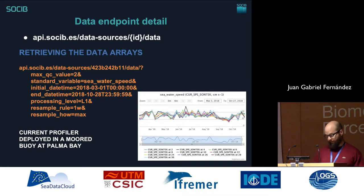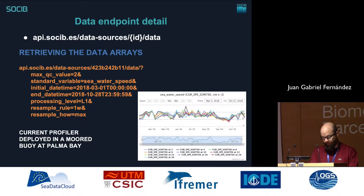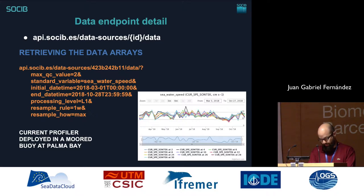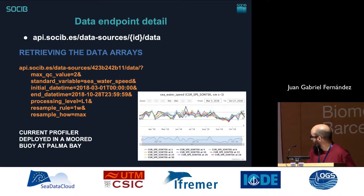One of the most useful features of this API is the possibility of recovering arrays of data regardless of how many files the dataset has. The data endpoint at the data source level allows us to recover these arrays by filtering with a set of criteria and by applying resampling operations. For instance, using the URI shown on screen, we obtain a time-series profile with sea water speed data measured by a current profiler deployed in our moored buoy at Palma Bay. The data is resampled at weekly resolution and the maximum of each week has been calculated. Only good and probably-good data has been considered based on the QC flag value.